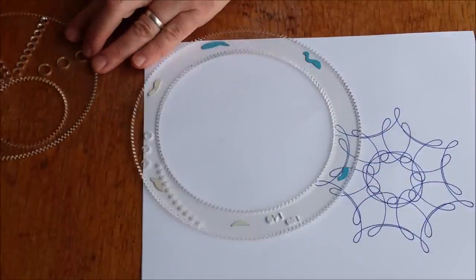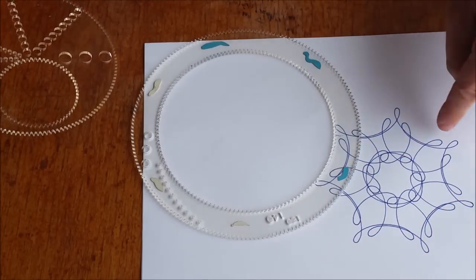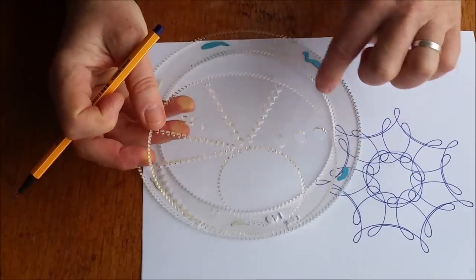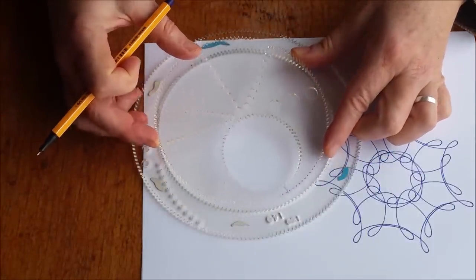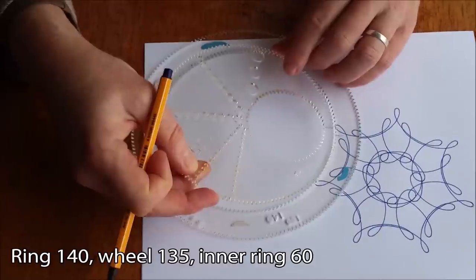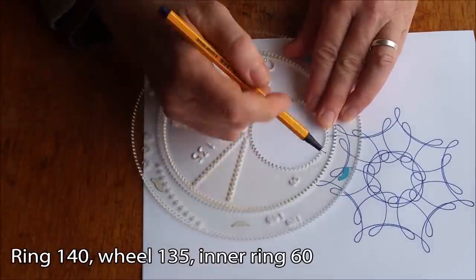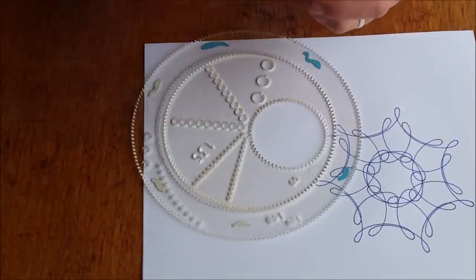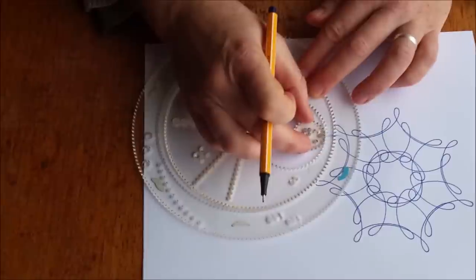So in the previous design, it was wheel number 48 inside hole number 60, which is inside wheel number 135, which is inside 140. I'm just going to line the first wheel up to the same mark I left in the last one. And this time I'm going to use wheel number 24.